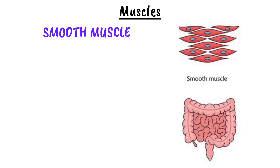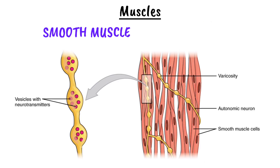Smooth muscle cells are small and spindle-shaped, and they have a single centrally located nucleus. Smooth muscle cells are typically arranged in two layers. Number one, the longitudinal layer, where muscle fibers run parallel to the organ's length, causing the organ to shorten and widen when contracted. Number two, the circular layer, where muscle fibers wrap around the organ's circumference, causing it to lengthen and narrow when contracted.